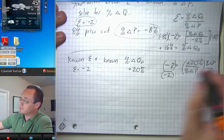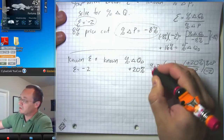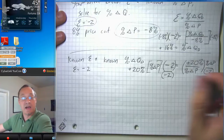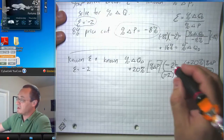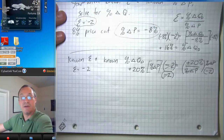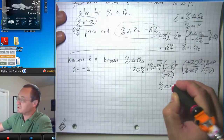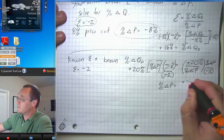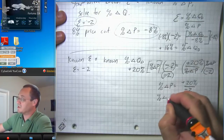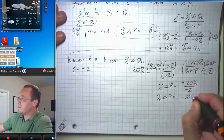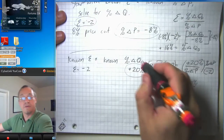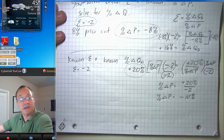We multiplied both sides by percent change in price and divided both sides by negative two. The negative two's cancel out, and the percent change in price terms cancel out, leaving us with percent change in price equals positive twenty percent over negative two, or percent change in price is negative ten percent. So to get our sales to increase by twenty percent, we're going to have to cut our prices by ten percent.